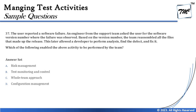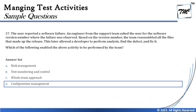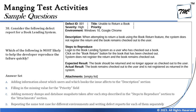The options are: A — risk management, B — test monitoring and control, C — whole team approach, and D — configuration management. Whole team approach is not what we are discussing. Test monitoring and control results in test progress reports and metrics. Risk management would need to reference risk. The right answer is D — configuration management — which covers version numbers, unique identification, history management, and traceability — four major aspects.